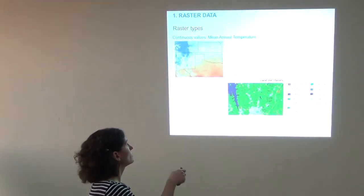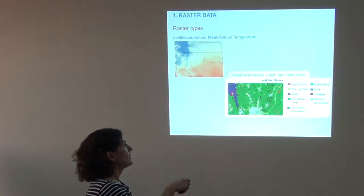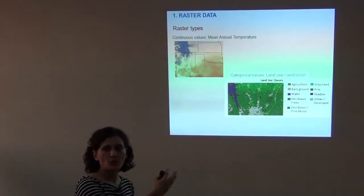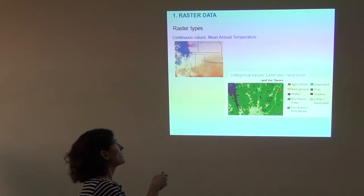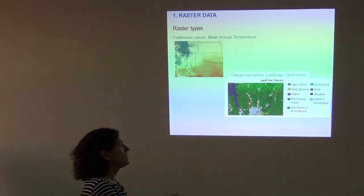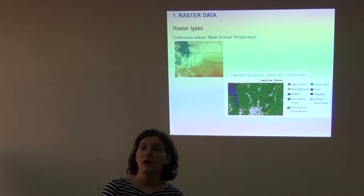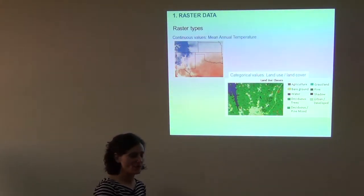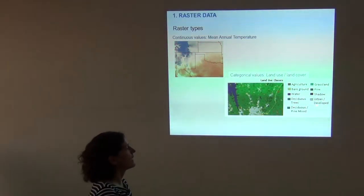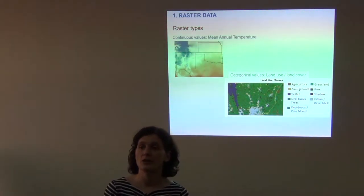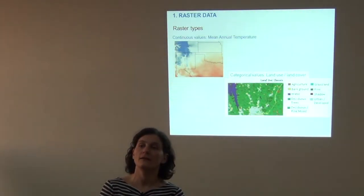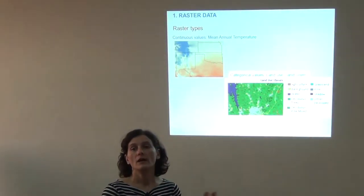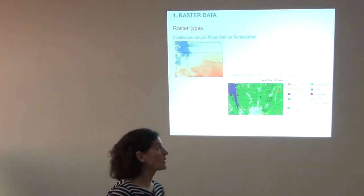One difference between a mean annual temperature raster and a land use/land cover raster is that temperature values are considered continuous — a very large number of possible values. Categorical values are when we have a finite number of values possible for the pixels. In a land cover classification we have about ten values, so that's why we call it a categorical raster. For mean annual temperature we have many more values — that's considered continuous.